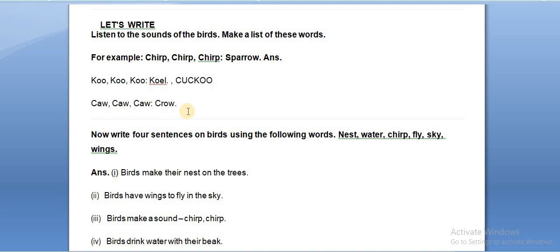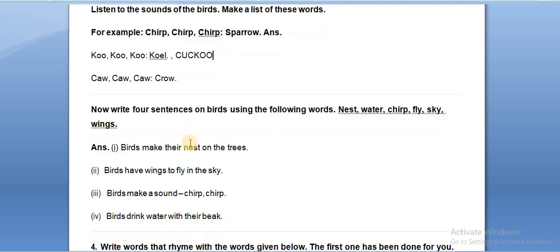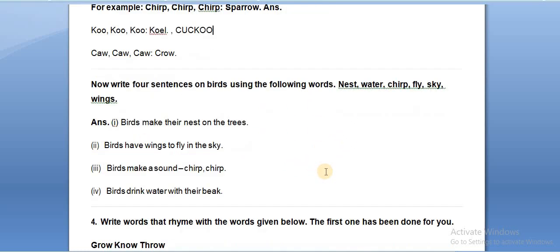Now, write four sentences on the birds using the following words. The words given are: nest, water, chirp, fly, sky, and wings. You have to use these words in sentences. You can write the same sentences shown here, or you can write different sentences of your own.